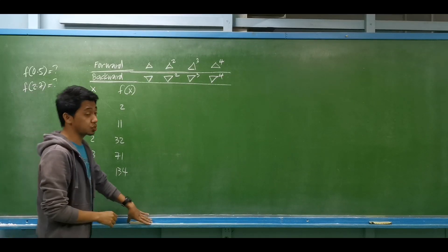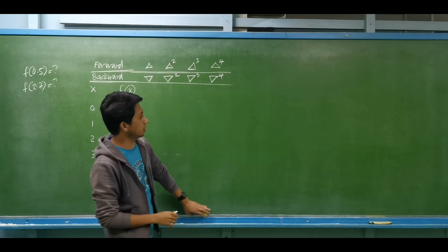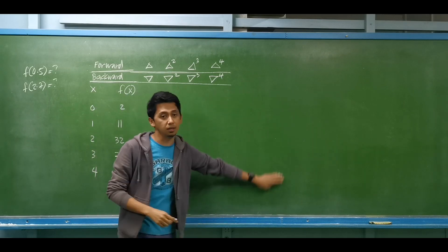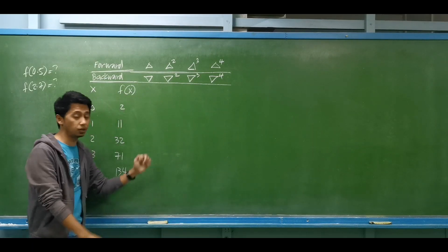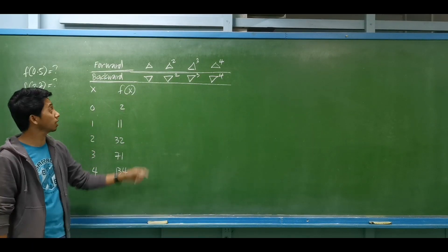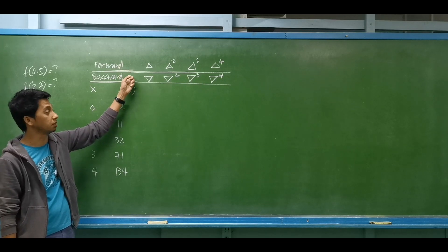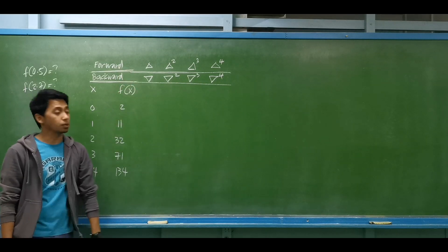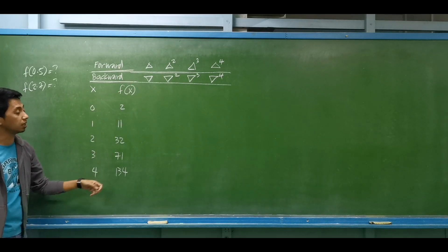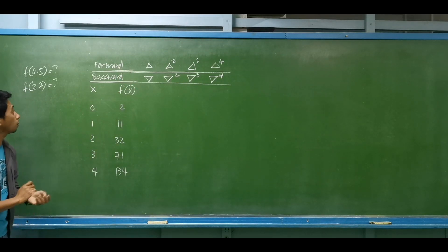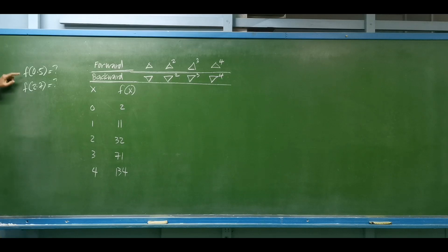Alright, so let's have an example for the Newton-Gregory method. We will discuss both forward and backward. For example, we have this set of data and we are required to determine the value of f(0.5) and f(2.7).